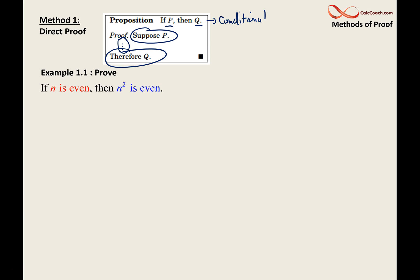If n is even, then n² is even, seems plausible, right? Think of any even number out there and square it. Of course, you'll get another even number, but we need to prove it. We need to convince using definitions, using a sound argument. We need to convince that it's true.